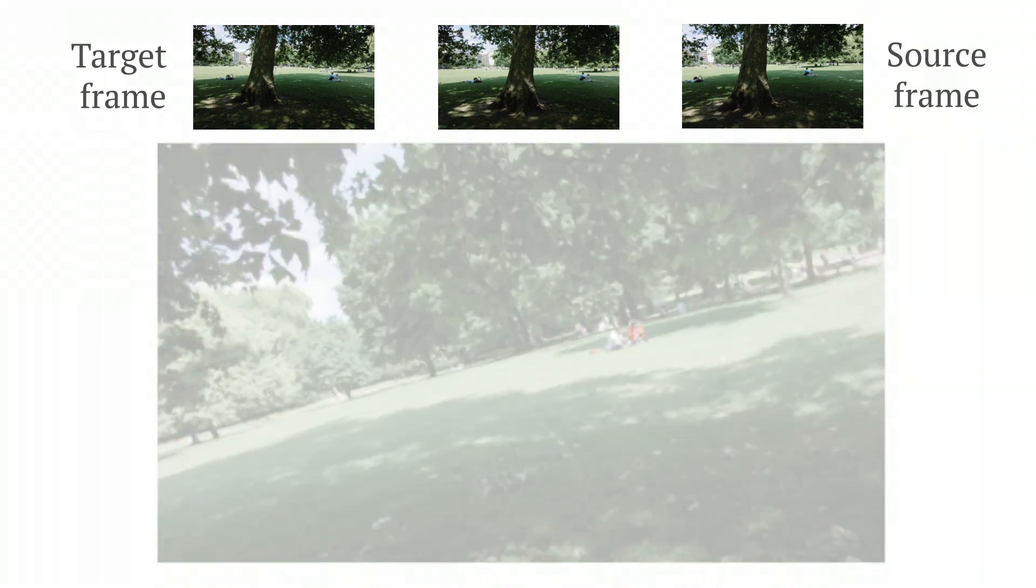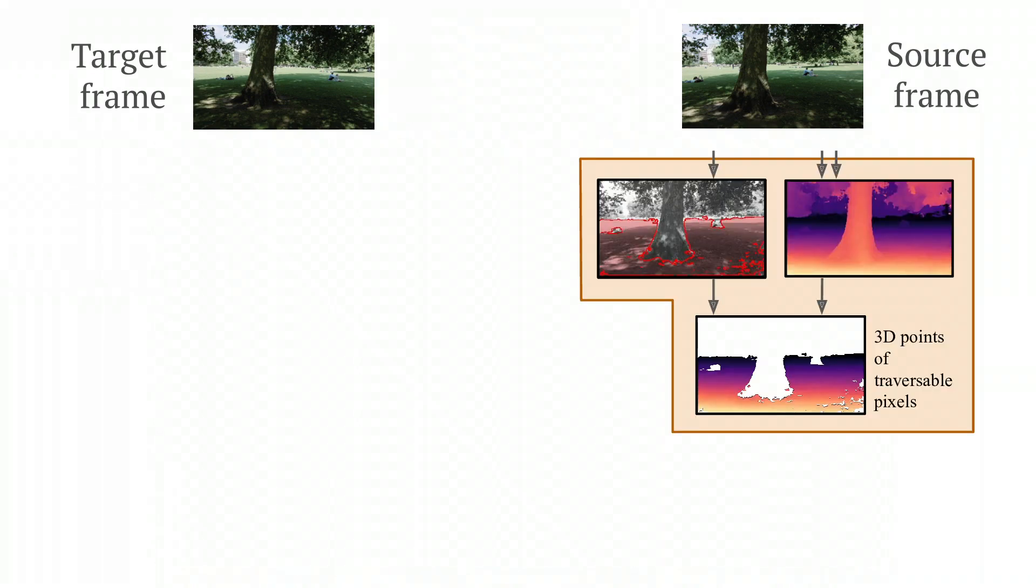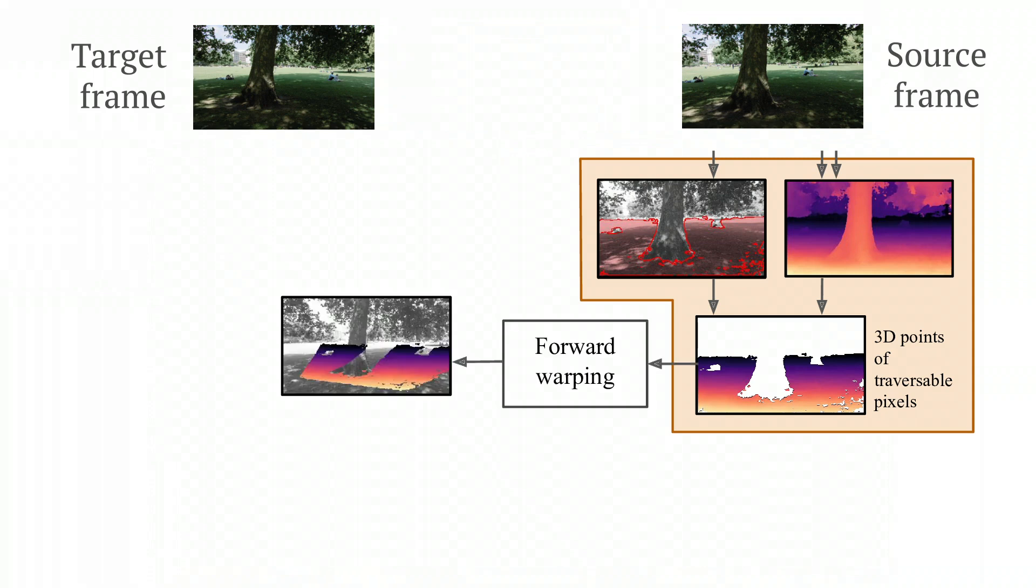Each source image has depth and ground segmentation estimated. Pixels in a source image that have been identified as belonging to a traversable surface are then projected into 3D and back projected into the target view.